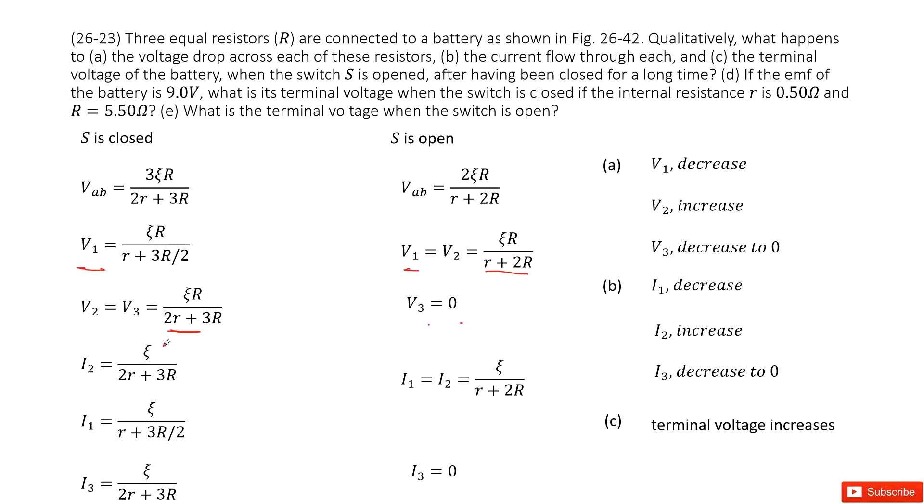So current changes, we look at I1. I1 initially is this term, I1 finally is this term. So of course, I1 is decreased. I2 is increased. I3 decreased to 0.